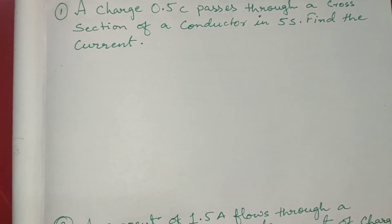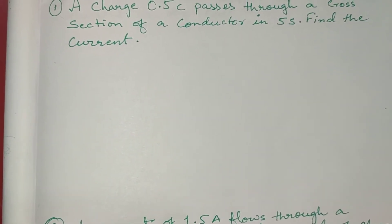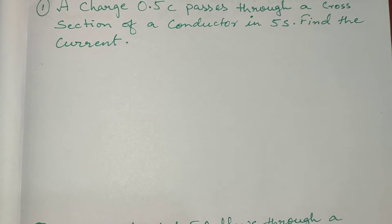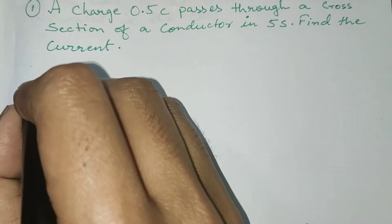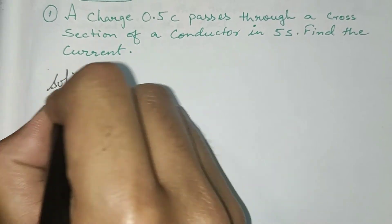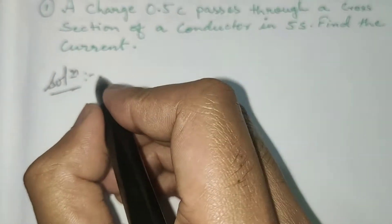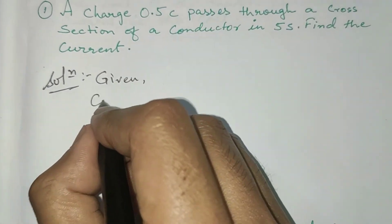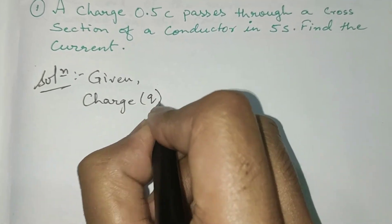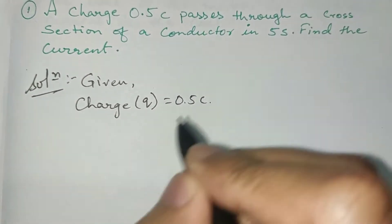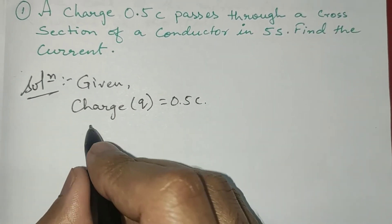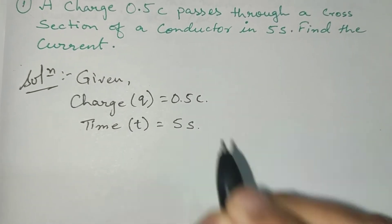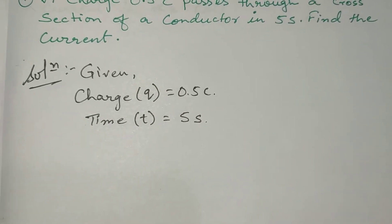This will be solved using the formula for current: I equals Q upon T. Current is the charge passing per unit time. We first write the given things. Charge Q is 0.5 Coulomb, time is given as 5 seconds, and we have to find the current, that is I.